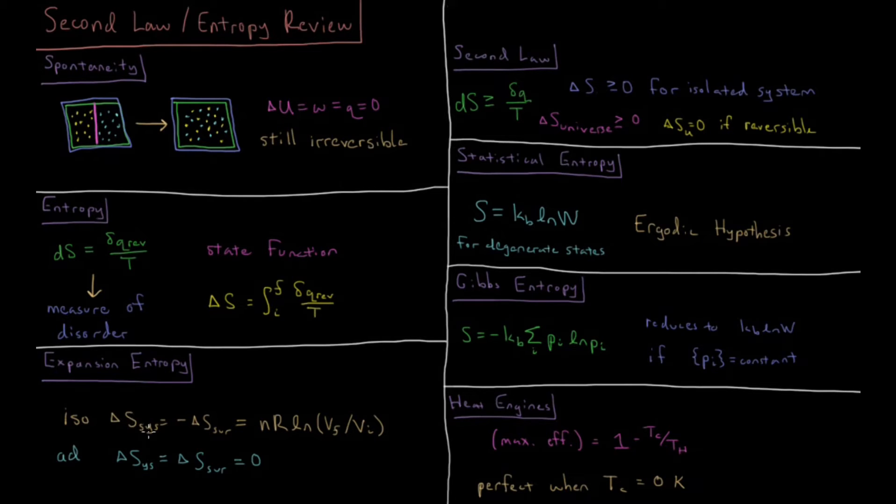The change in entropy for the system is equal to the minus change in entropy for the surroundings during isothermal expansion. And that is equal to number of moles times gas constant times natural log of the final volume divided by the initial volume. For an adiabatic process, the expansion entropy for the system and the surroundings is equal to zero.